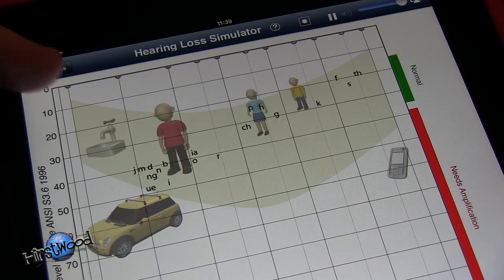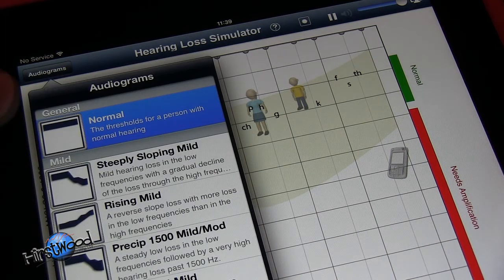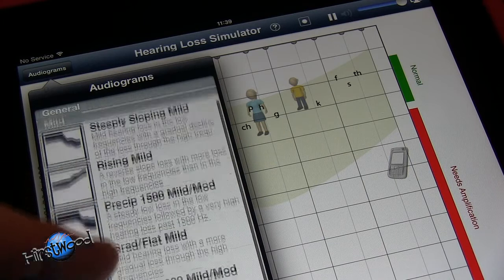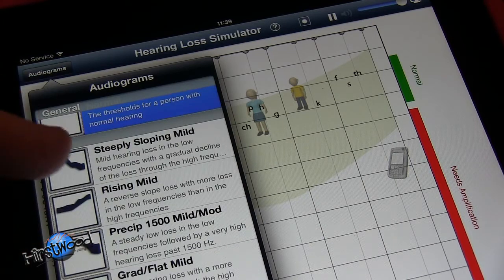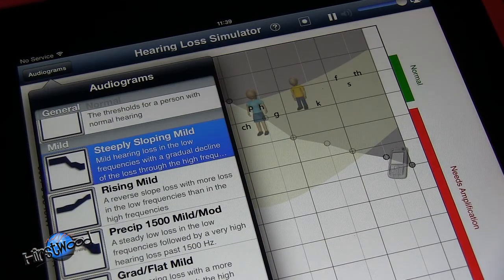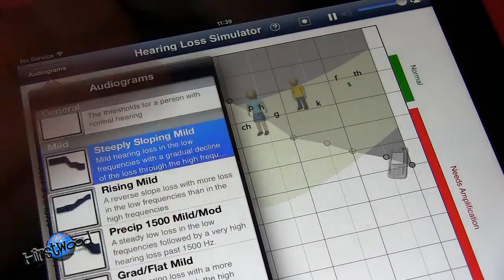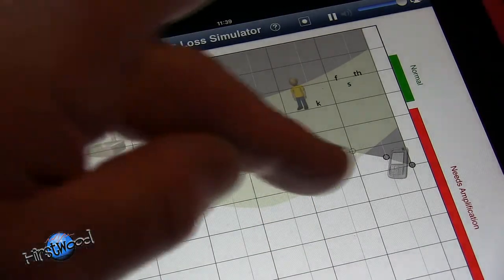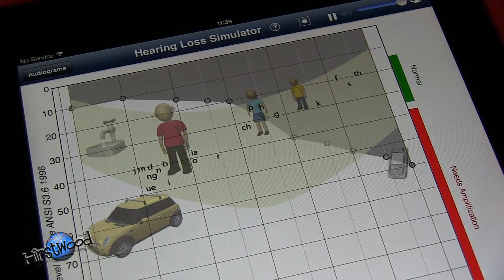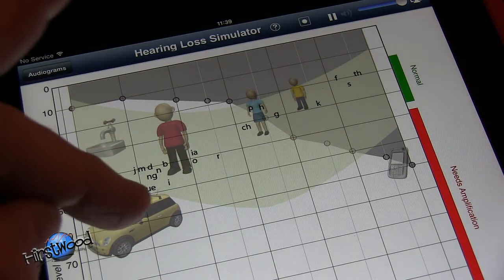That's what it sounds like normally. Go back to audiograms and let's go for a different kind of hearing loss - steeply sloping mild. Now press that, tap out, and you can see the graph here shows you from high frequency to low frequency what it sounds like. Let's have a listen.